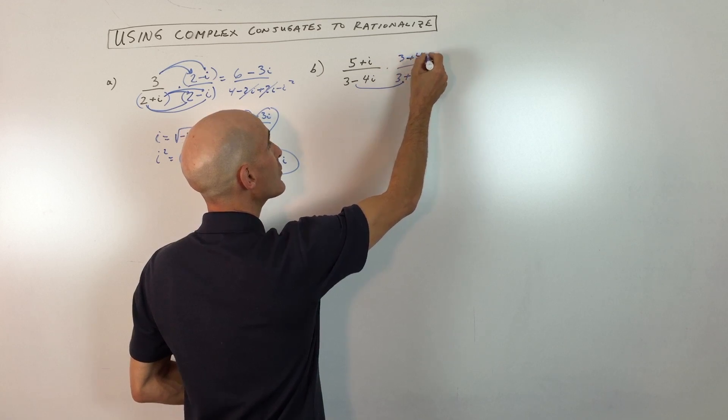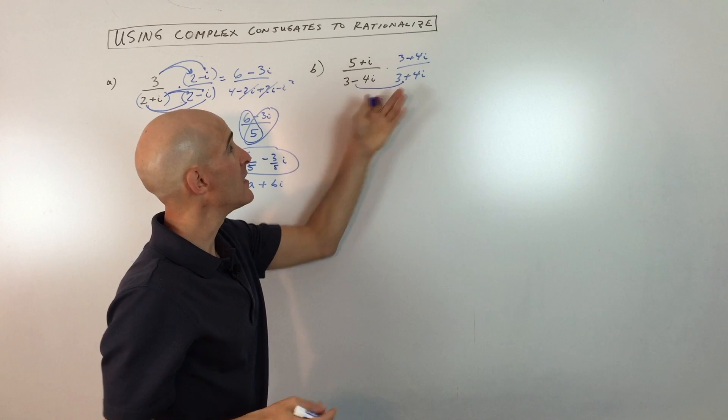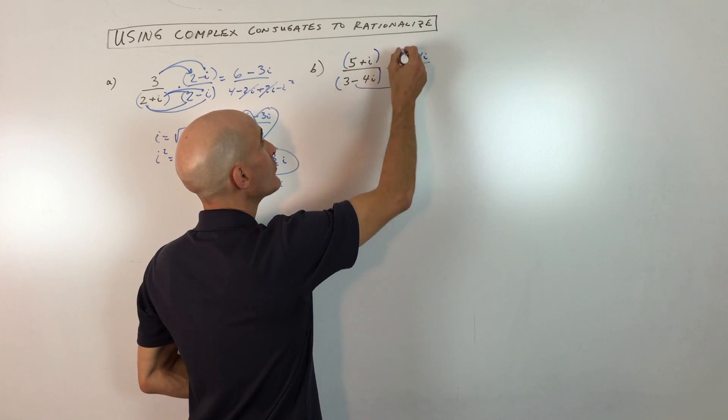Now, whatever you do to the denominator, you want to do to the numerator, because anything divided by itself is one. And then all we have to do now is multiply.